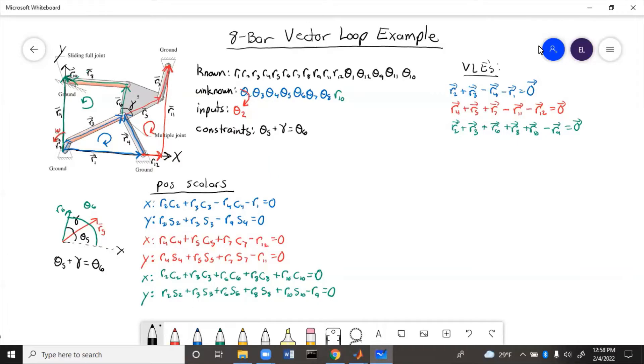Now we need to figure out the velocity equations. So we'll take the derivative of all the position equations and the constraint equation. For the constraint equation, we know that gamma is a constant. So if we take the derivative of this, beta 5 dot equals beta 6 dot. This will be a convenient substitution.